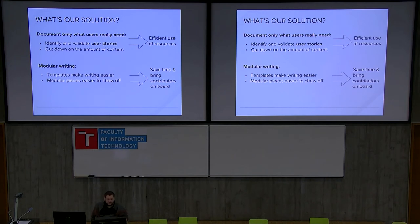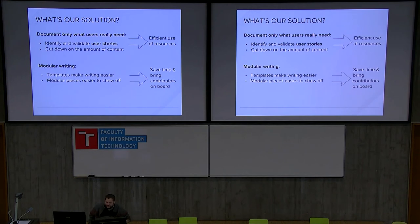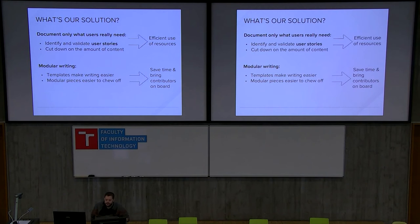The solution is to only document the stuff that users really need and want to read — because nobody really likes to read documentation, especially if there's a lot of it. We try to identify and validate user stories that are ones users are really interested in, containing no fluff and not trying to educate the user unnecessarily. In the process, we cut down on the amount of content so there is less to maintain and it's easier to consume. Therefore we use our resources better — because resources are always limited, whether it's a product, company, or open source project.